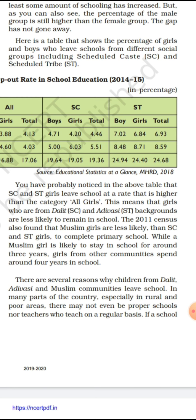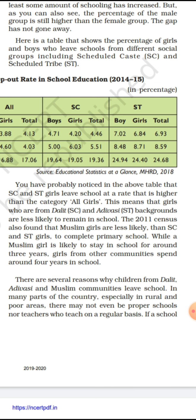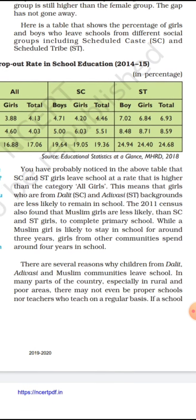There are several reasons why children from Dalit, Adivasi, and Muslim communities leave schools. In many parts of our country, especially rural and poor areas, there may not even be proper schools or proper teachers to teach on a regular basis. This is one most important reason — no school nearby, no proper teacher available, the area is rural and poor.